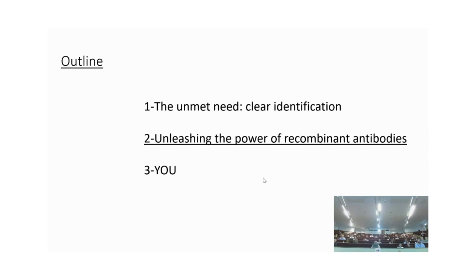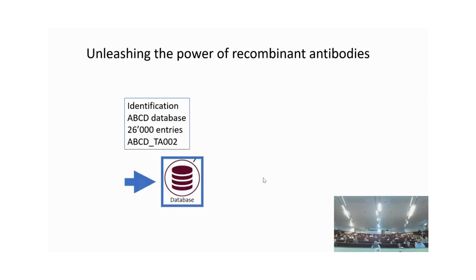What have we done about this? We created a database called ABCD — Antibodies Chemically Defined. ABCD has collected for a number of years the sequenced and published sequences of recombinant antibodies. It's all manually curated, linking very clearly to the intended target of each antibody. This ABCD database today contains 26,000 entries — about 25,000 from the literature or patents, and 1,000 deposited by people including us at the University of Geneva. Every identifier comes with a name like ABCD TA002, and each sequence generates a different ID.